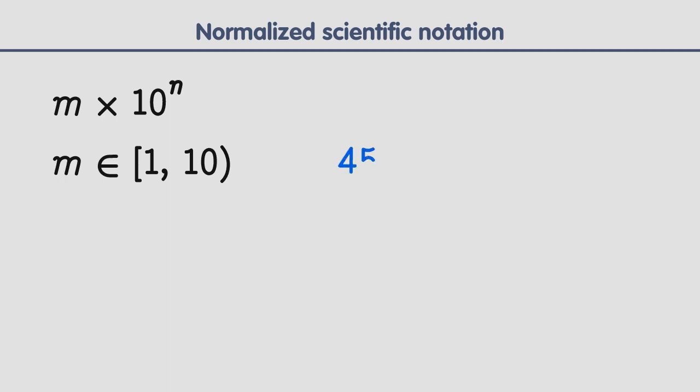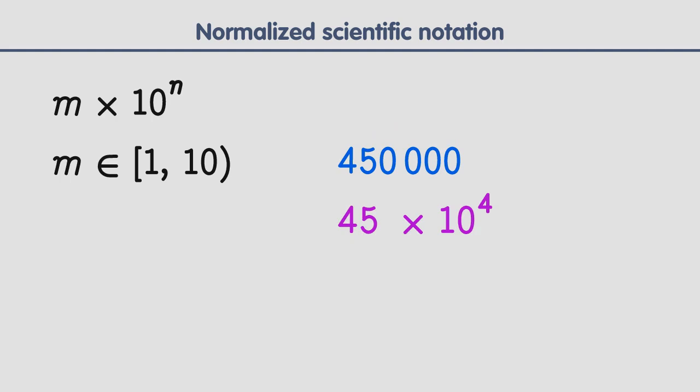Let's see an example: write this number in normalized scientific notation. The first thing we can notice is that this number has 4 trailing zeros, which means we will have 10 to the 4th power, multiplied by 45, the number without the trailing zeros. And this is how we write the number in scientific notation. But if what we want is normalized scientific notation, we must do an extra step. In normalized scientific notation, the first coefficient — in this case 45 — must be a number greater than or equal to 1, but less than 10. Therefore, 45 does not apply.